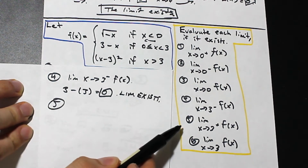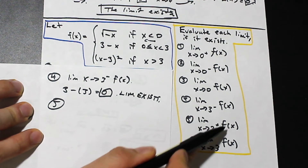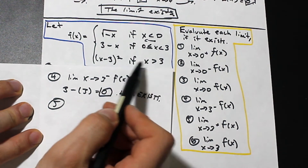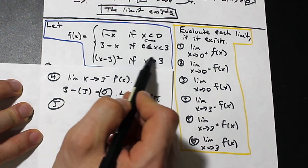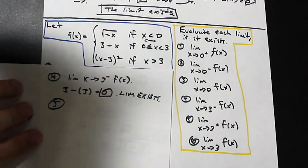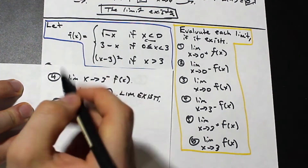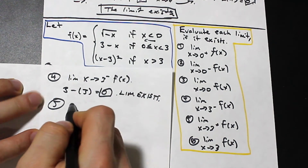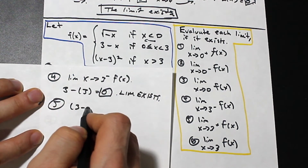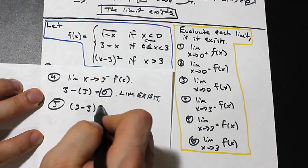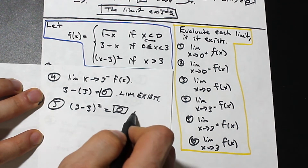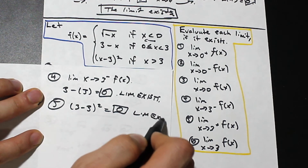Question 5: the limit as x approaches 3 from the right. When x is greater than 3, the function is (x minus 3) squared. We head from the right of 3 toward it, so we plug in 3: (3 minus 3) squared equals 0. The limit exists because we got a value.